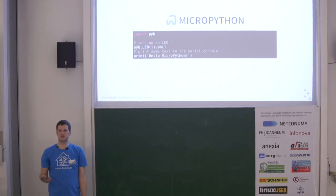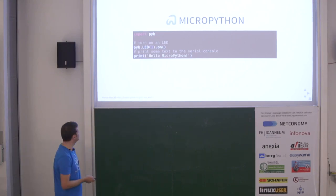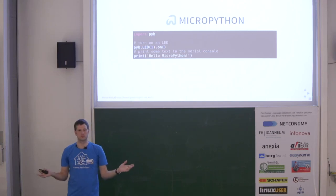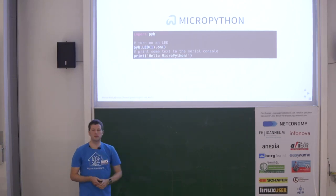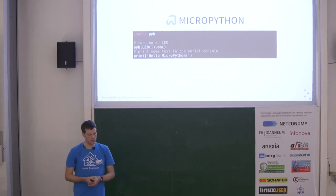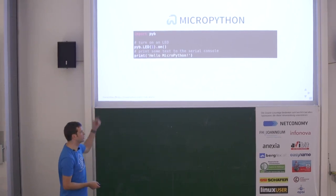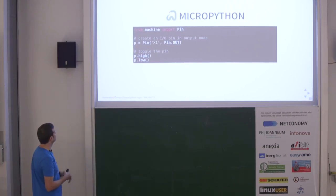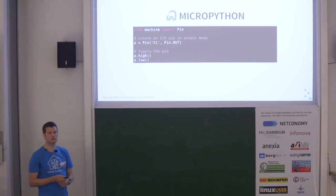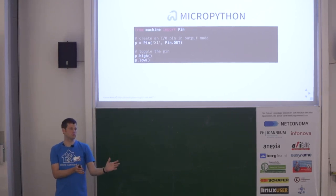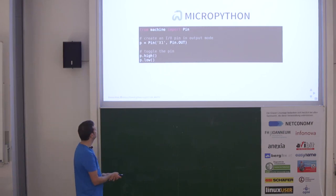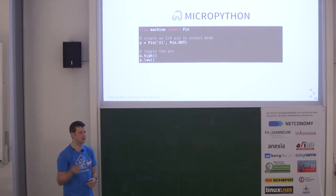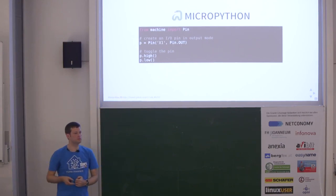To use it, you import PyB — the base Python library for the PyBoard — then use the LED object to say, for example, turn LED number one on. You can get debug output via the serial console by connecting your computer via USB. The machine library is the more general one: you import Pin, define a pin labeled X1 as an output pin, then toggle it high and low to send signals at the chip's 3.3V signal voltage.